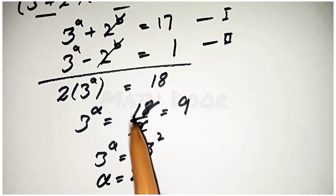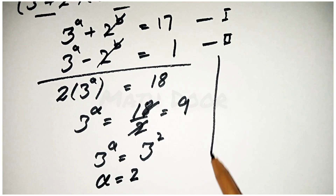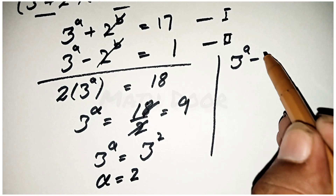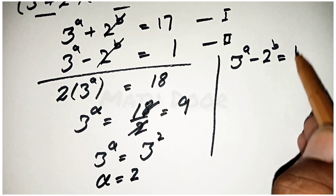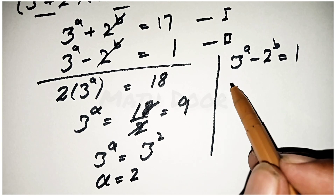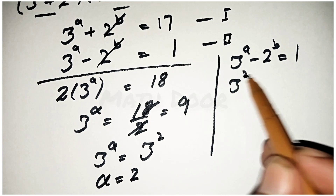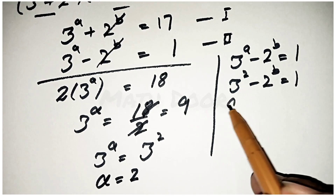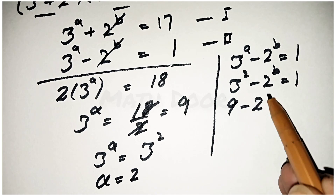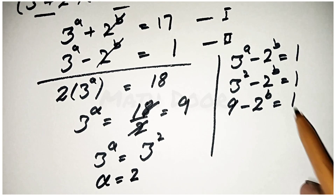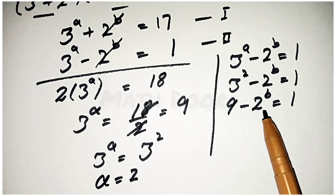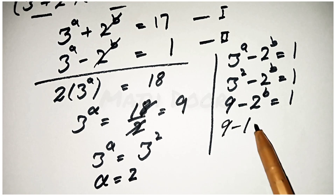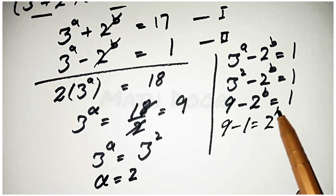Now we put the value of a into the second equation. The second equation is 3 power a minus 2 power b is equal to 1. Substituting a equals 2: 3 power 2 minus 2 power b is equal to 1, which is 9 minus 2 power b equals 1. Taking terms to each side, the equation becomes 9 minus 1 equals 2 power b.